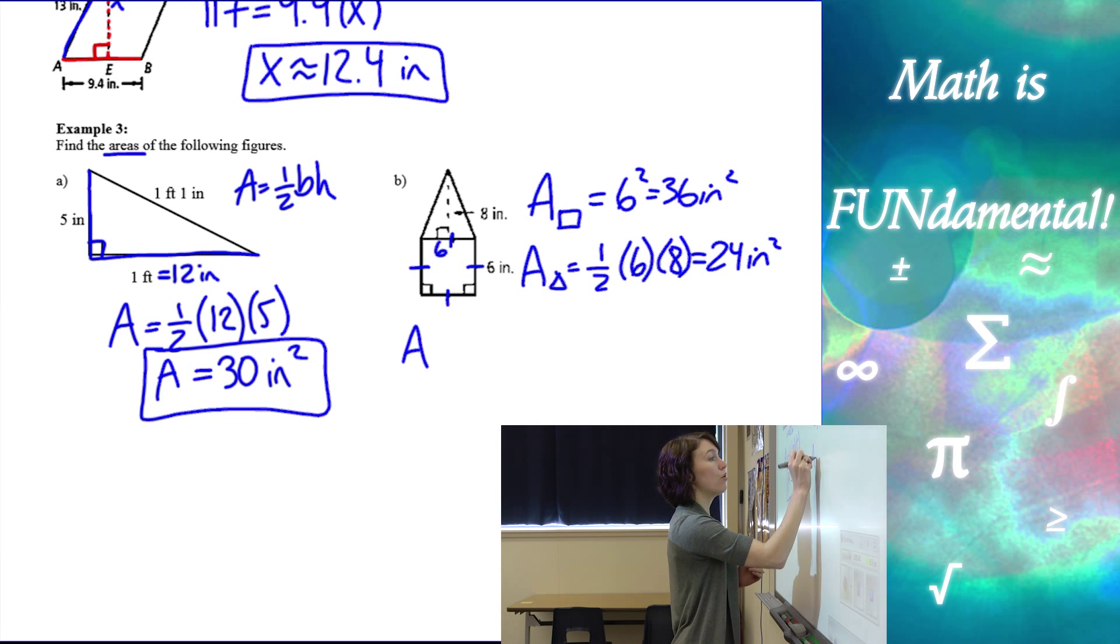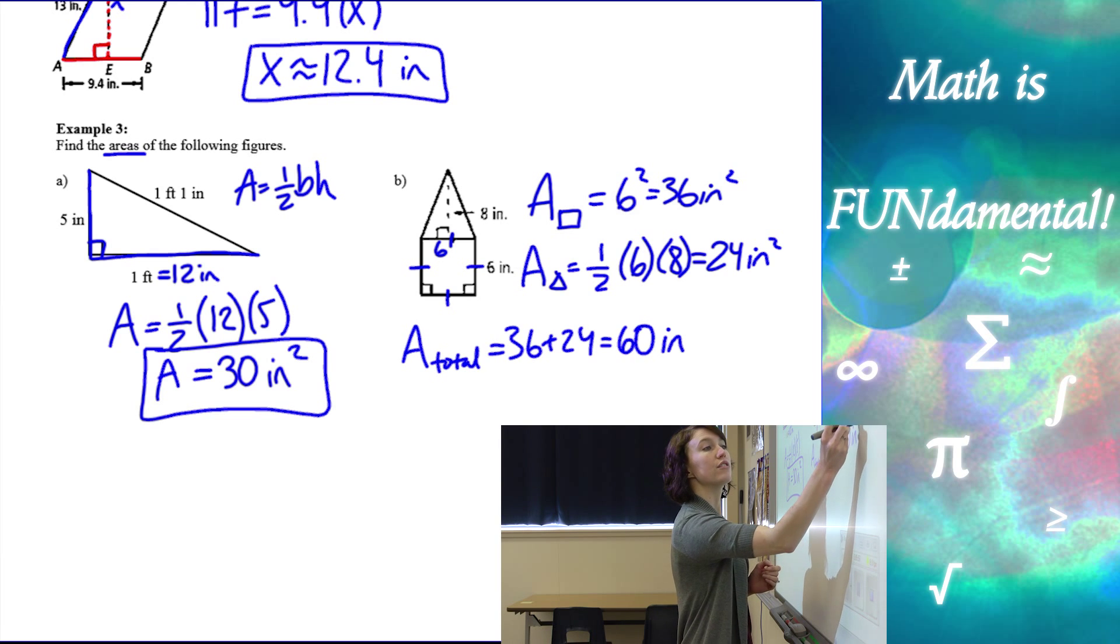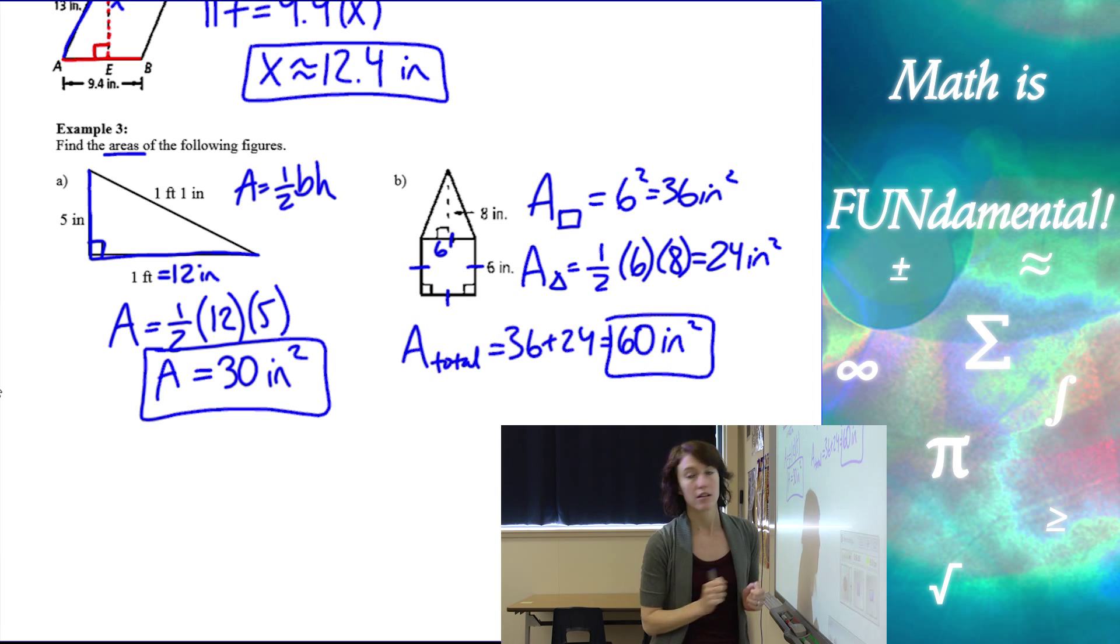So now my total area of this figure is going to be 36 plus 24, which will give us 60 inches squared. So there's just a few examples for you on how to use our formulas for area.